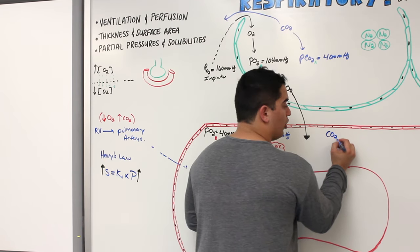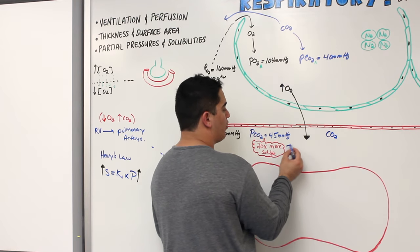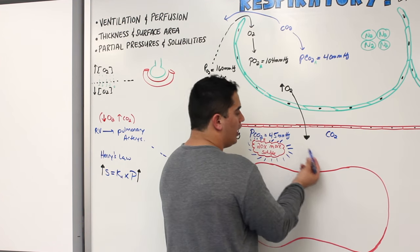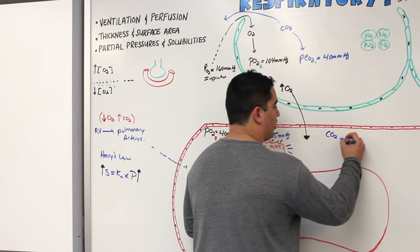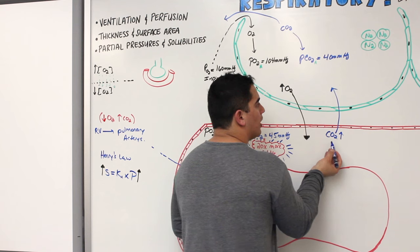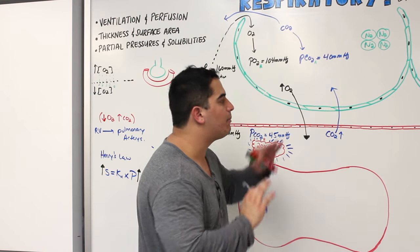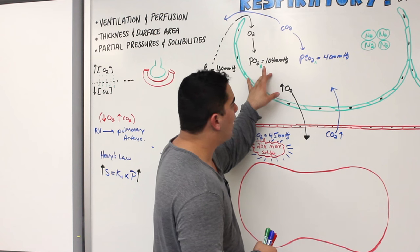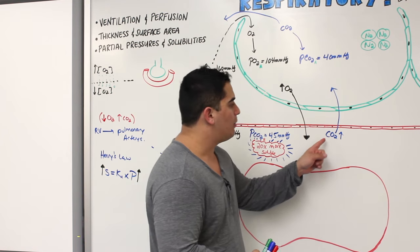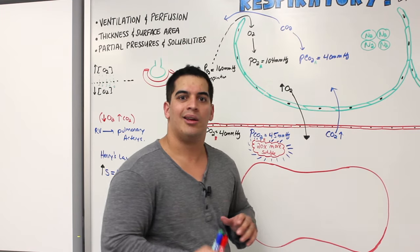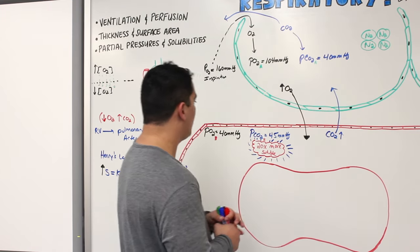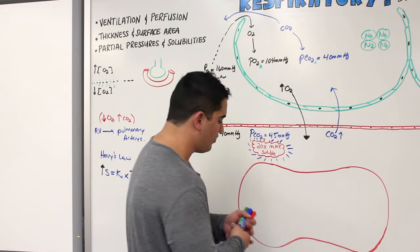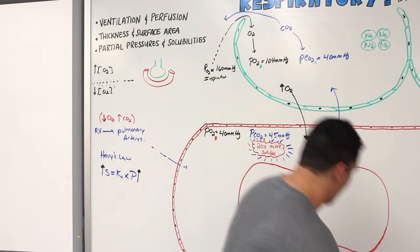CO2 still moves from high concentration to low concentration, but its solubility plays a huge role. It is 20 times more soluble in the plasma and alveolar fluid. So decent amounts of CO2 go from the blood into the alveoli. The simplest definition of external respiration: movement of oxygen from the alveoli into the pulmonary blood, and movement of CO2 from the pulmonary blood into the alveoli.